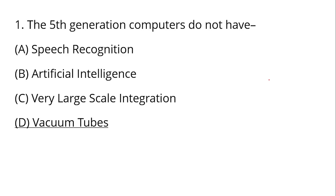5th Generation of Computer uses Ultra Large Scale Integration — meaning Very Large Scale Integration. Vacuum Tube is not used in 5th Generation. Vacuum Tube was used in the First Generation of Computer. Then Transistor, then gradually Integrated Circuit was used, then Very Large Scale Integration, then Ultra Large Scale Integrated Circuit — that is 5th Generation of Computer.